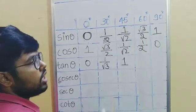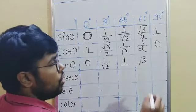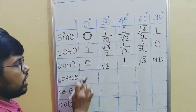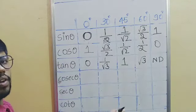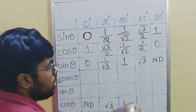One by zero, we know, is not defined in mathematics, so you write ND. Once you write tan, cot value is just written in reverse manner: ND, root three, one, one by root three, and zero.